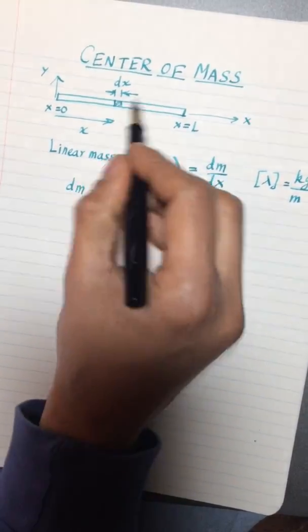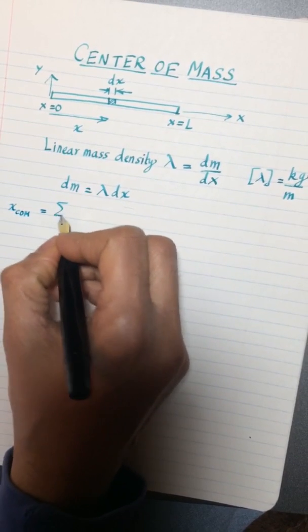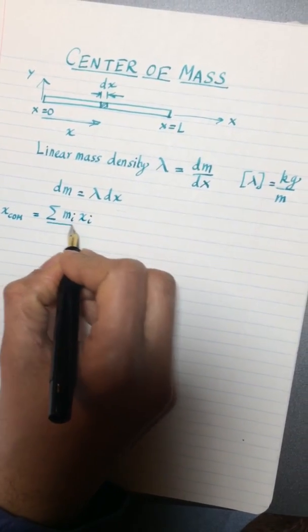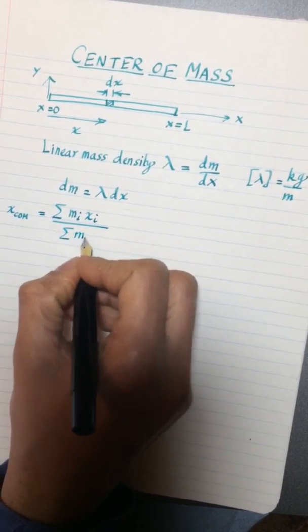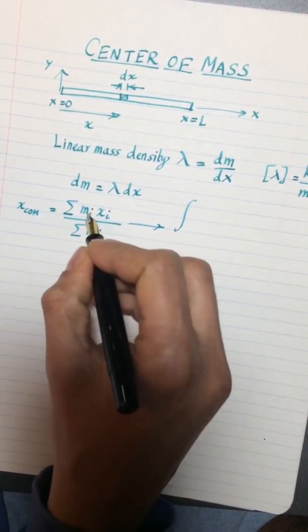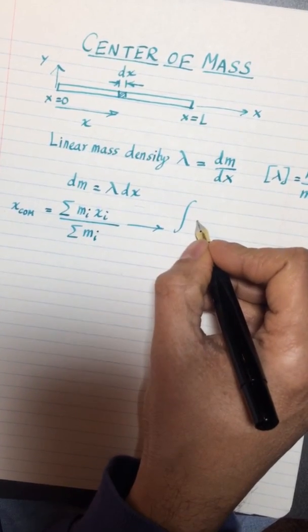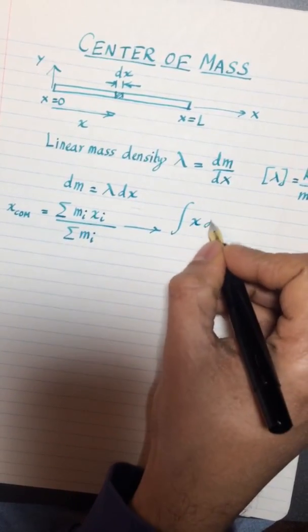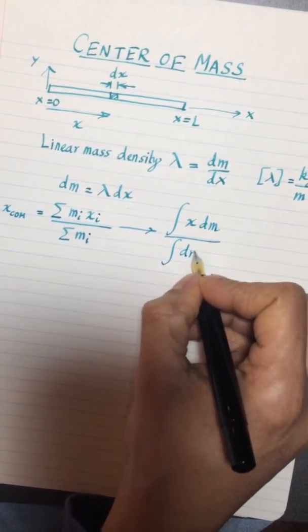Now to define the center of mass you normally would have used the following definition which is sum over all the ith particles mass times the ith particle distance divided by the sum of all the masses. Well if you take this to the continuous limit, mass points are replaced by these dm's, so it's going to be the xi will just be x and this mi will become dm, divided by the integral of all these mi's which again become dm's.